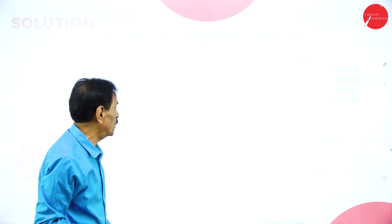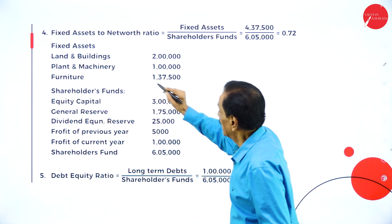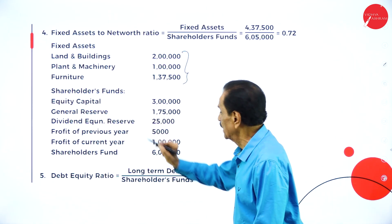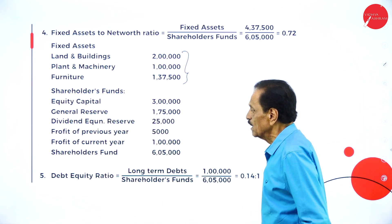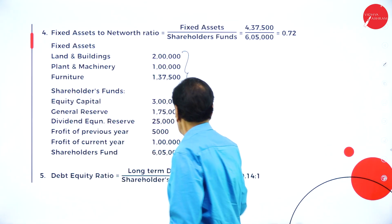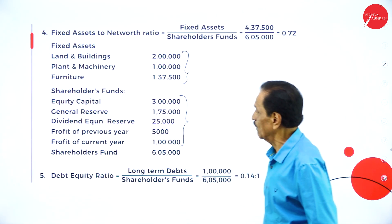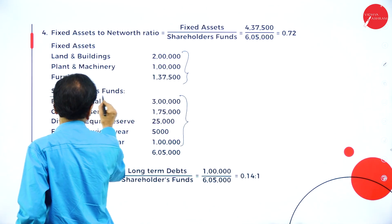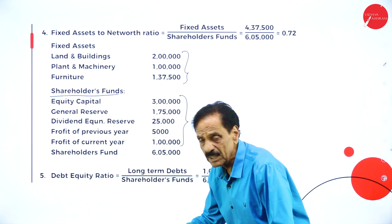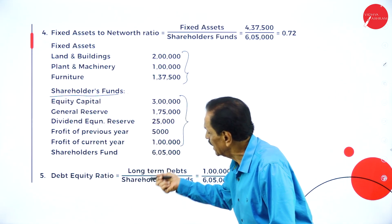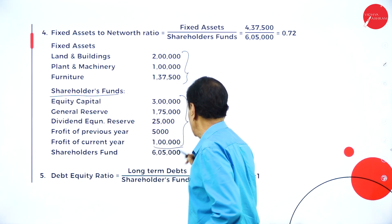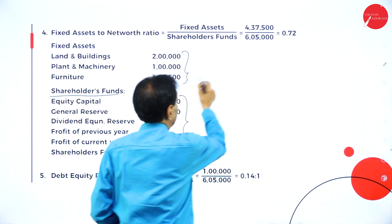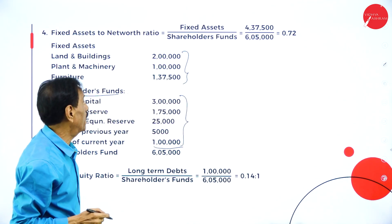Fixed asset to net worth ratio: fixed assets are land and building, plant and machinery, and furniture. Shareholders fund includes equity share capital, general reserve, dividend equalization reserve, profit of the previous year, and profit of the current year — totalling 6,05,000. Fixed assets total 4,37,500. Apply: fixed asset divided by shareholders fund = 4,37,500 divided by 6,05,000 = 0.72 times.